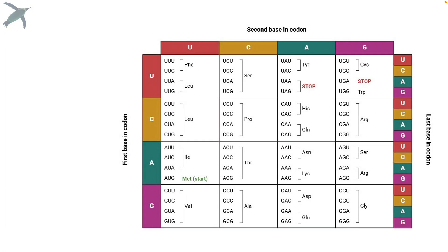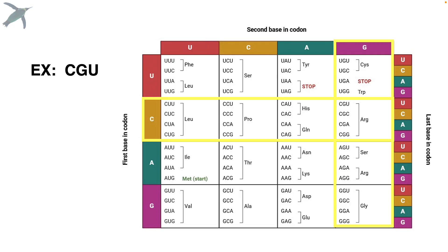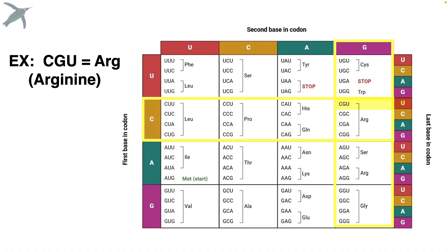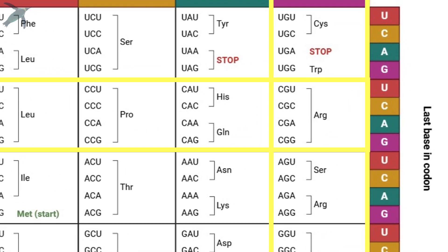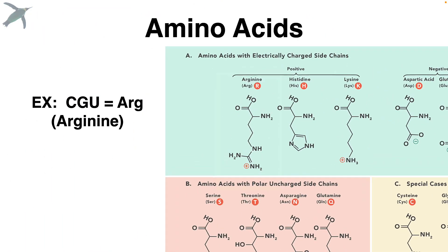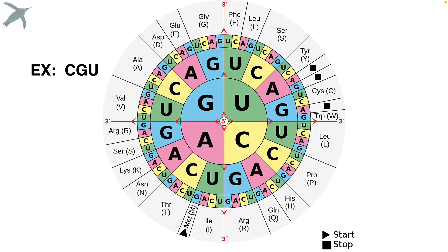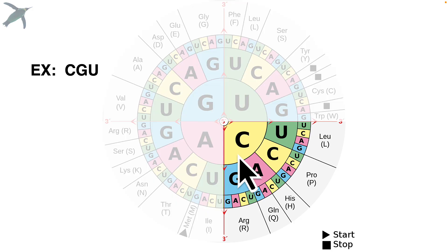We can look at the codon table in table form or in a wheel. For example, the codon CGU: we start with the first base C, the second base G, and the third base U — and that gives us arginine. So CGU in the messenger RNA translates to the amino acid arginine. Using the wheel gives us arginine again, so both methods work.